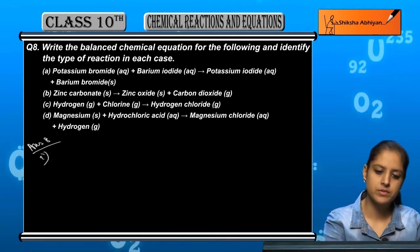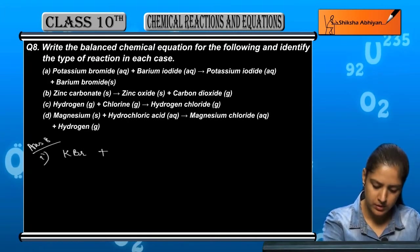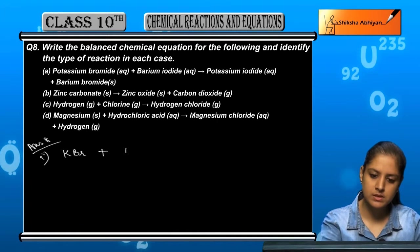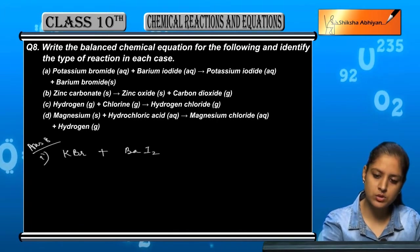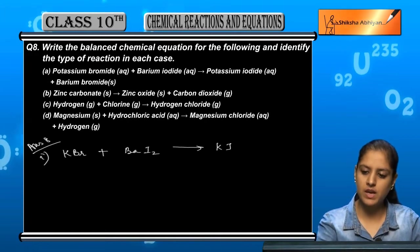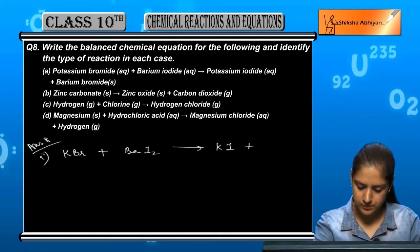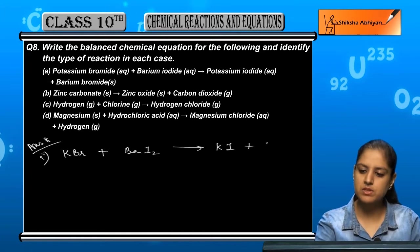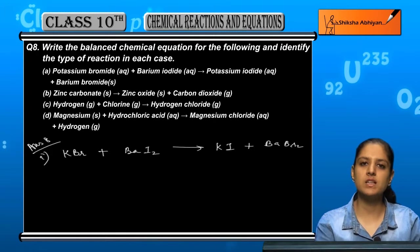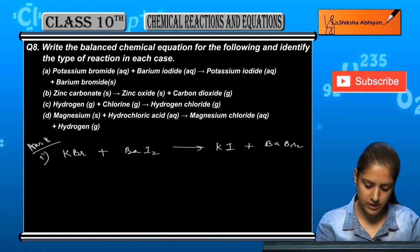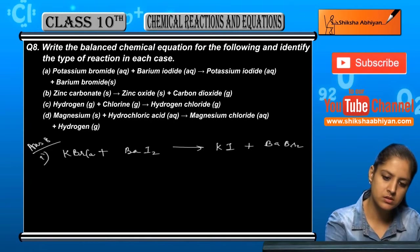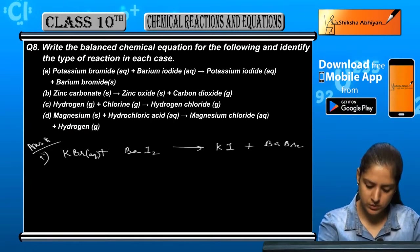Let us start from equation one. Potassium bromide, that is KBr, plus barium iodide, that means BaI2, gives us potassium iodide, that is KI, plus barium bromide which is BaBr2. Now we have state annotations given: potassium bromide is aqueous, BaI2 is given to us as aqueous again, potassium iodide is aqueous again, and BaBr2 is solid.